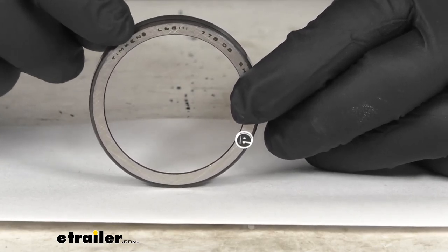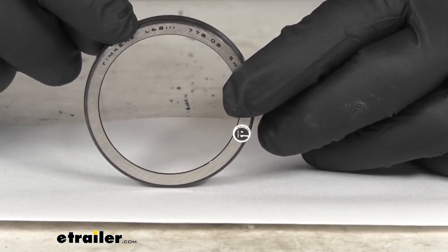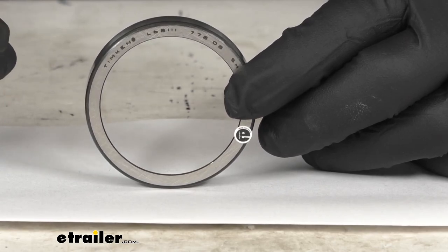You just want to look for this number on the current race that you're needing to replace. However, if you don't see that number on your race...